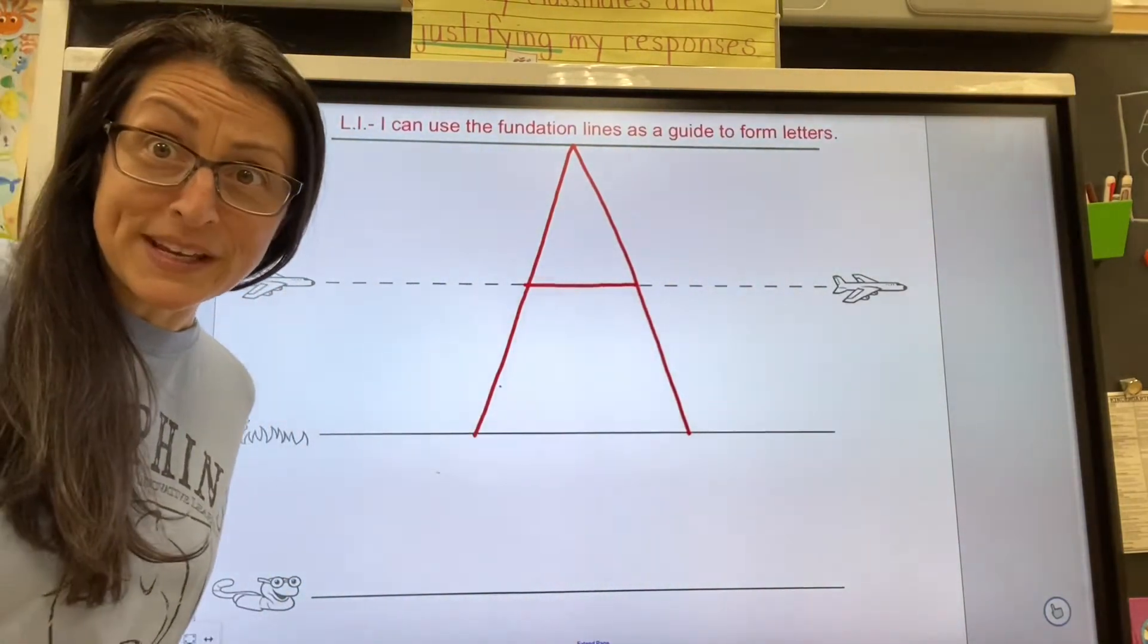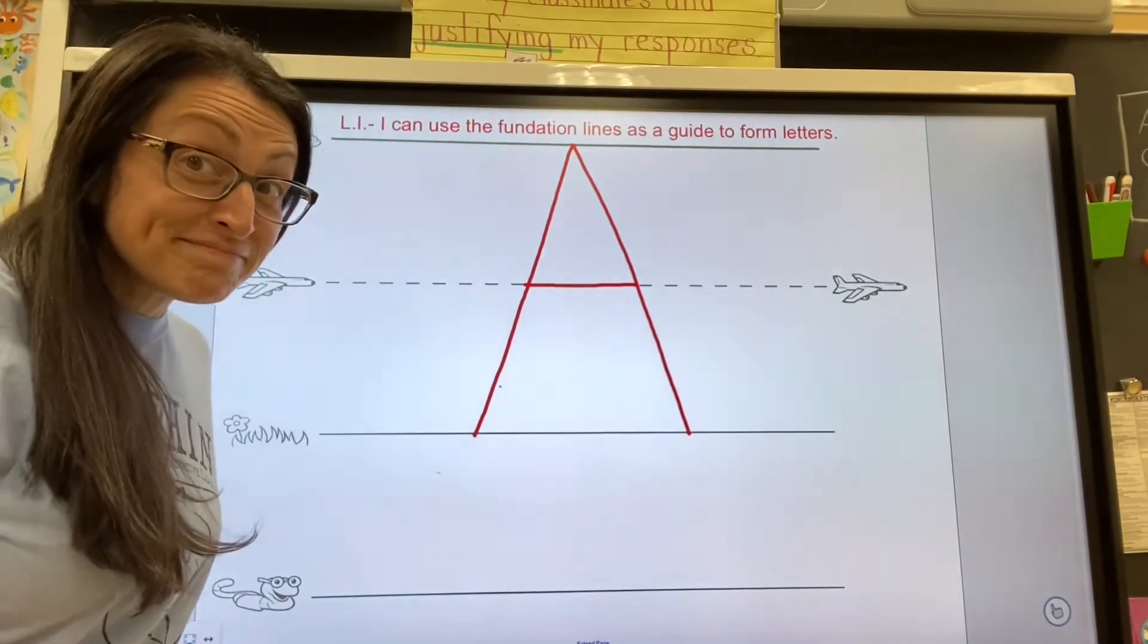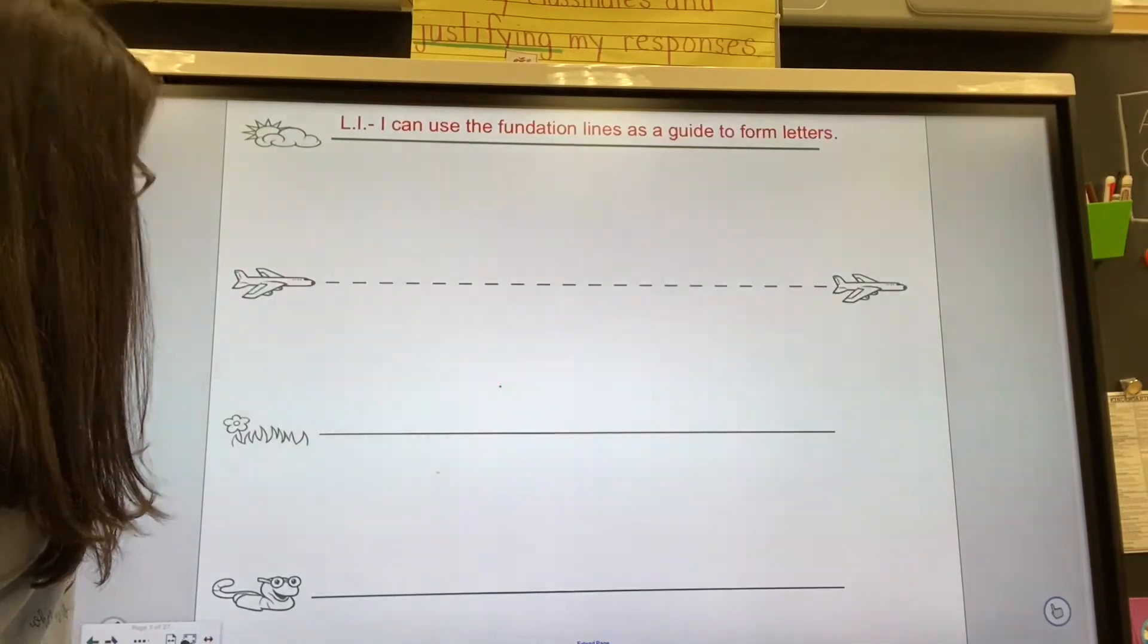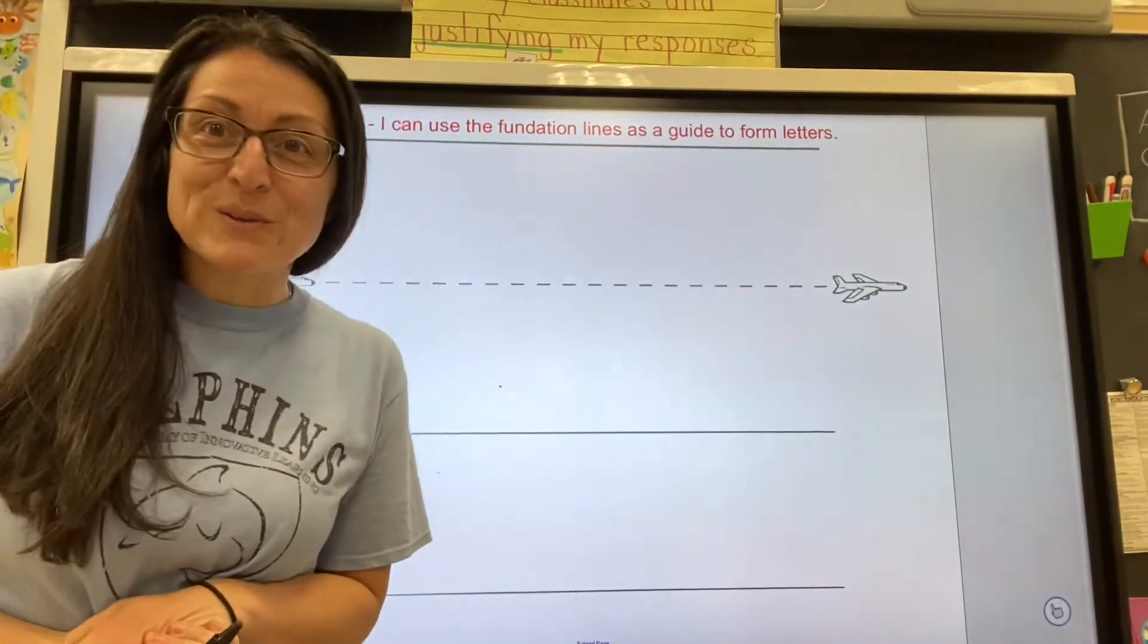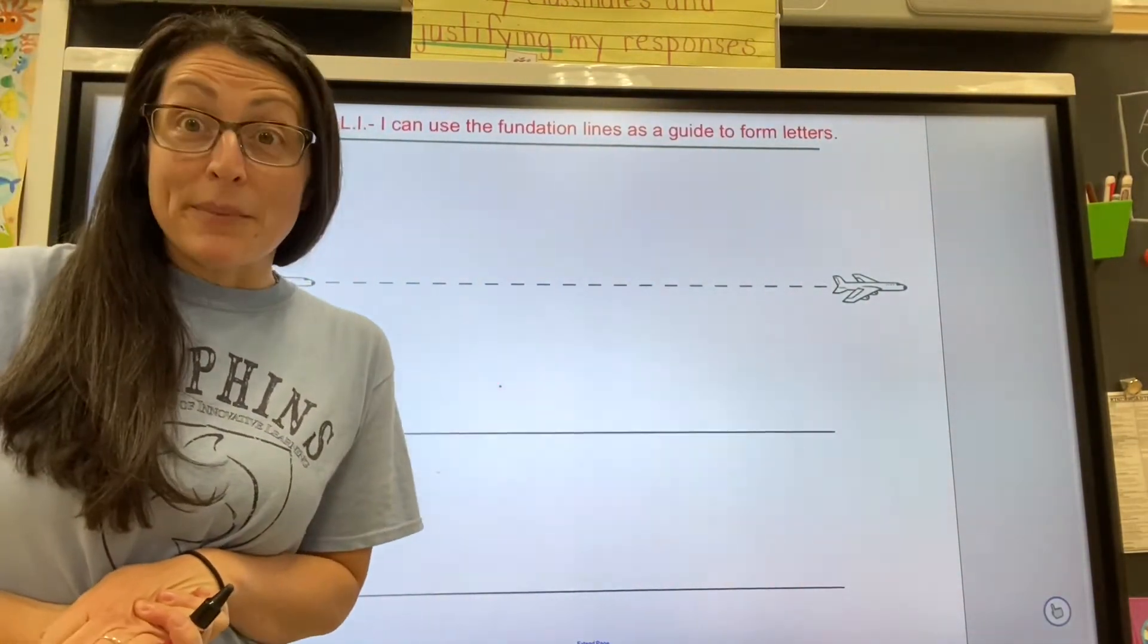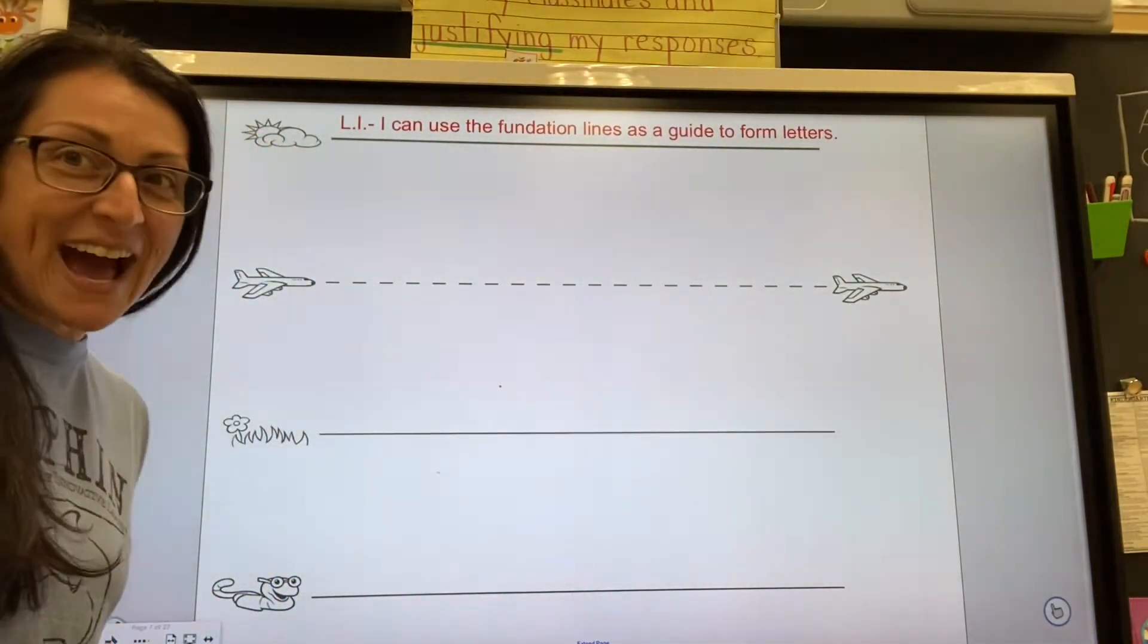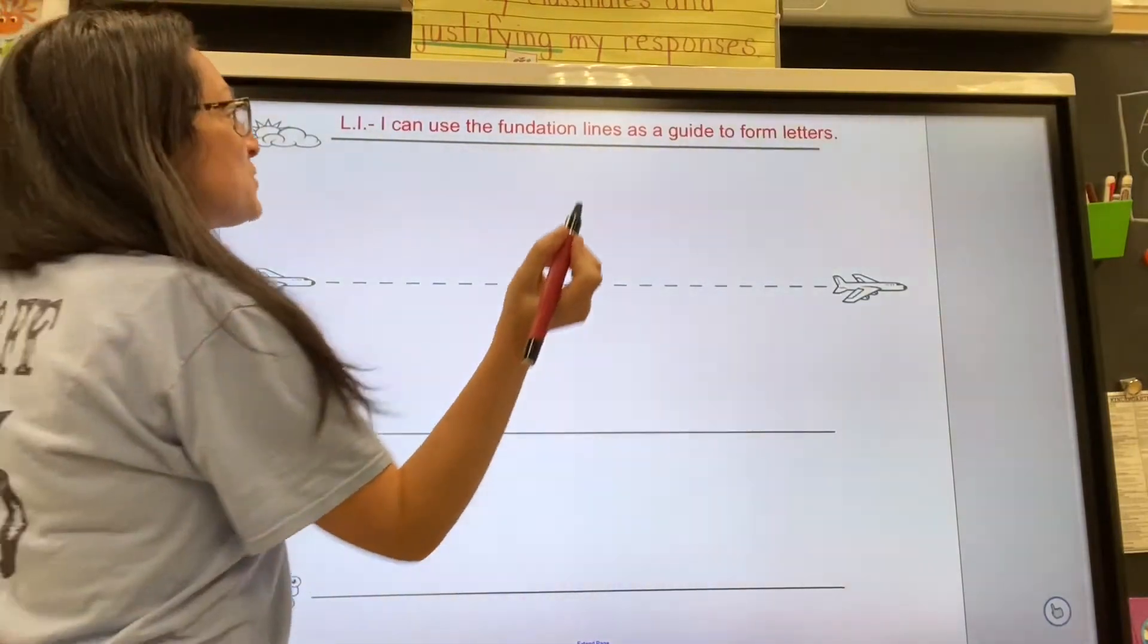That was pretty easy. What's the next letter in the alphabet? B! You're right! And B makes the B sound. So to do an uppercase or capital B, we're also going to start all the way up at the skyline. Repeat after me.